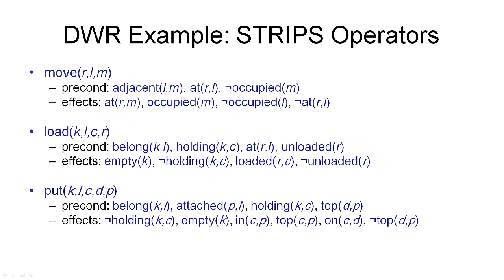Here are some examples of operators defined for the dock worker robot domain. The first is the move operator. Move is the symbol that identifies this operator, and the full name includes the symbol plus three variables: a robot R and two locations — the location we're moving from and the location we're moving to. The internal structure is defined by preconditions and effects. There are two positive preconditions: the two locations must be adjacent, and the location we're moving from must be adjacent to the location we're moving to.